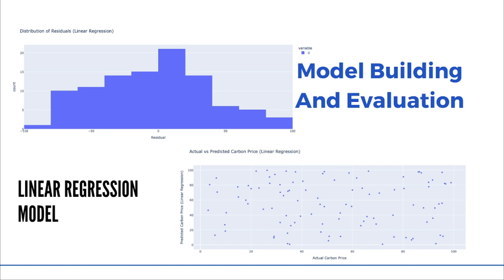We developed a predictive model using linear regression and random forest techniques to forecast carbon prices. While the model is accurate, overfitting is a concern for unseen data. The model helps in making informed decisions about CCUS investments and strategies, especially as carbon pricing evolves. We recommend continuous validation with new data and exploring more sophisticated models for future improvements.